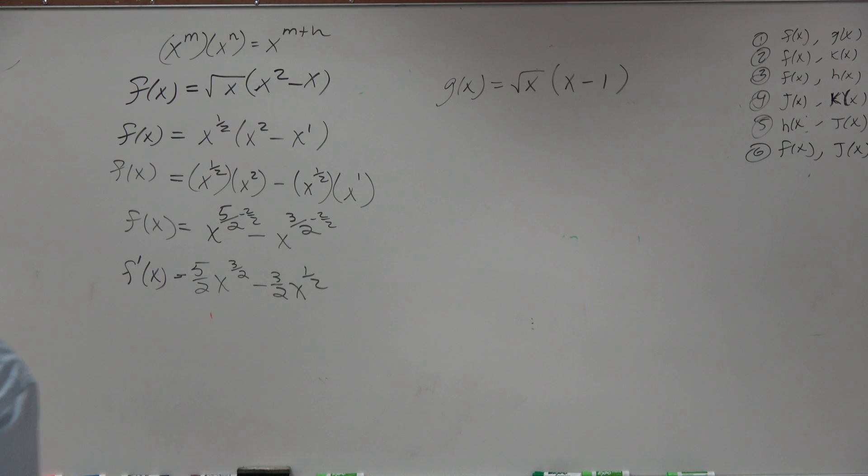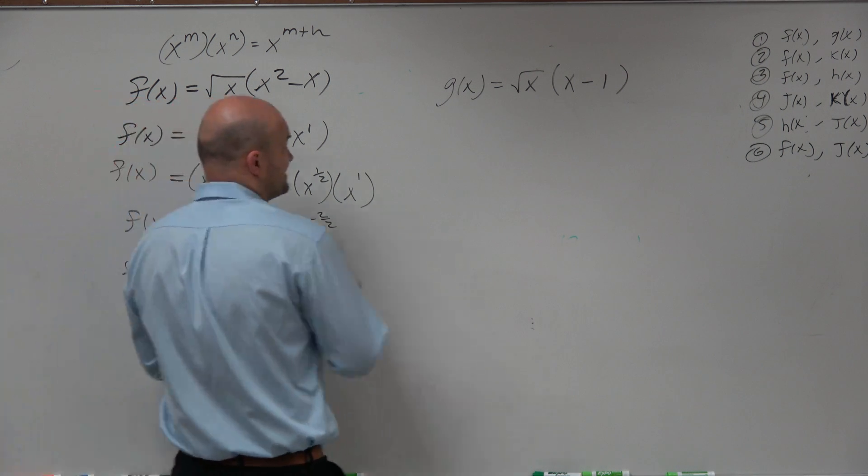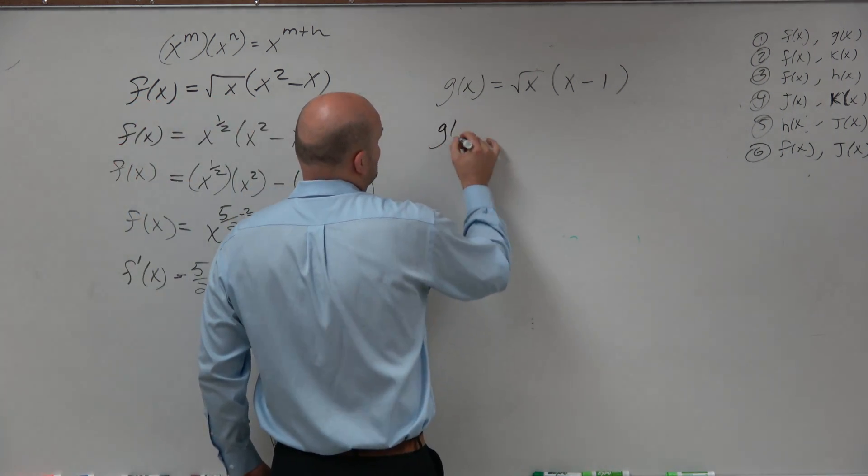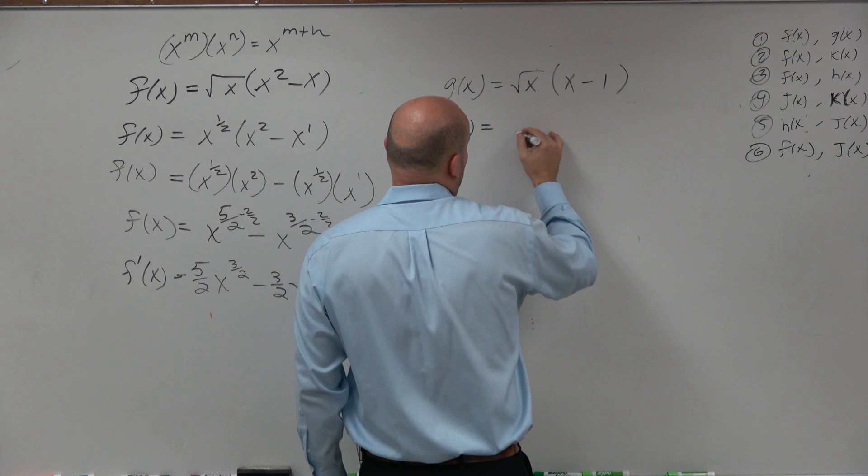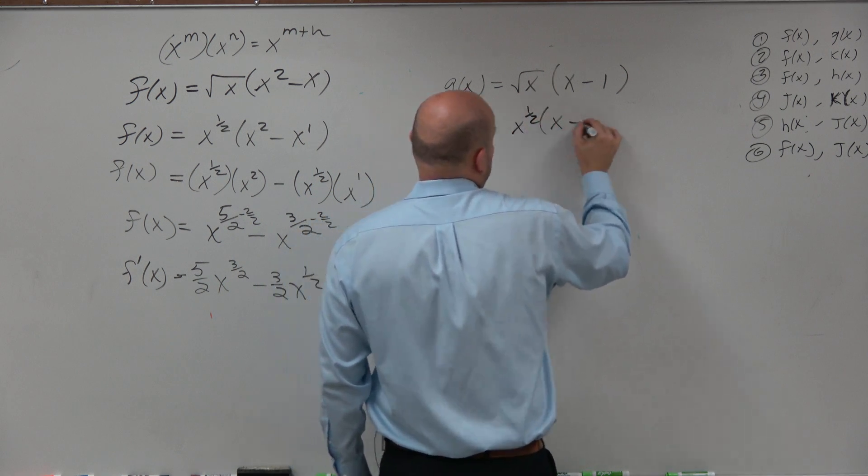OK, so when doing a problem like this, exact same thing: you're going to have g(x) equals x to the 1/2 times (x minus 1).